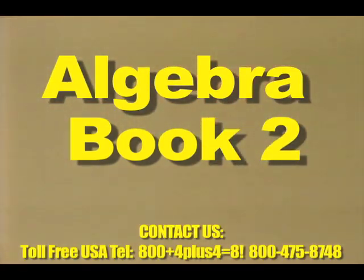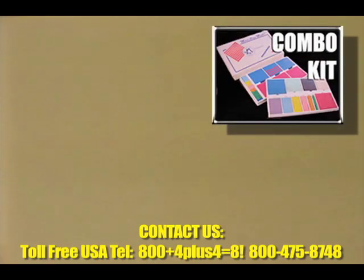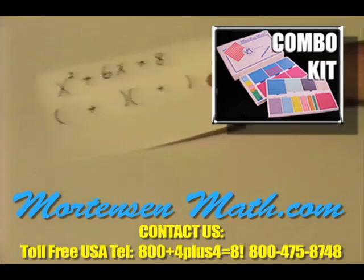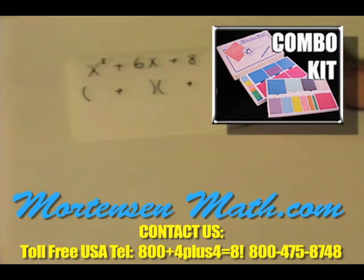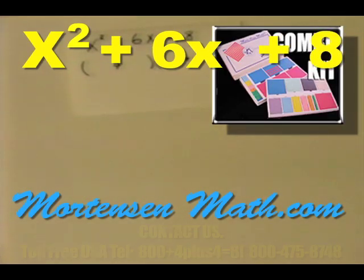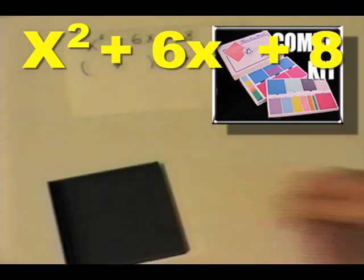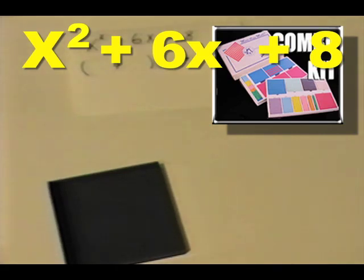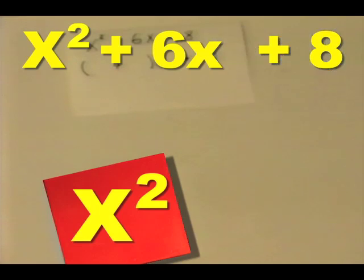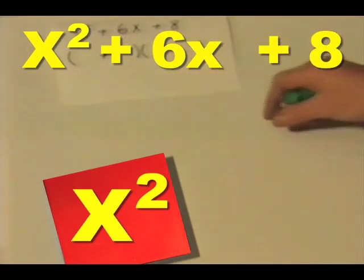We are still allowed to count out our units individually. We will look at the problem x squared plus six x plus eight. We will get out our x square. We will also get out our eight units. We are not allowed to count out our x's, so we will pass the x's by for now and count out eight units.